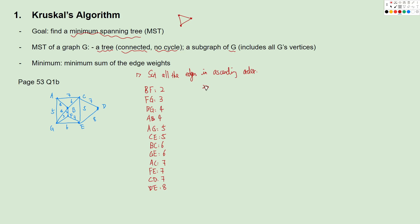The second step is to select the edge of the least weight to start the tree — this is BF. After that, we consider the next arc, FG. If linking this edge creates a cycle, we don't draw it. Since FG does not create a cycle, we select it. Next we look at BG — if we link BG, we will have a cycle BFG, which is not allowed, so we reject this edge.